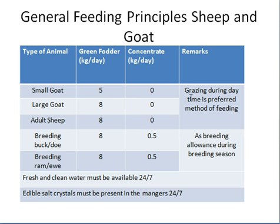Usually for sheep and goat, we send them out for grazing during the daytime. For example, at 8 a.m. the shepherd leads the animals for grazing and they come back in the evening. In either way, we need to feed them the required amount of green forage, either through grazing or through stall feeding. Now you have a clear idea of how much forage and concentrate to give your livestock.